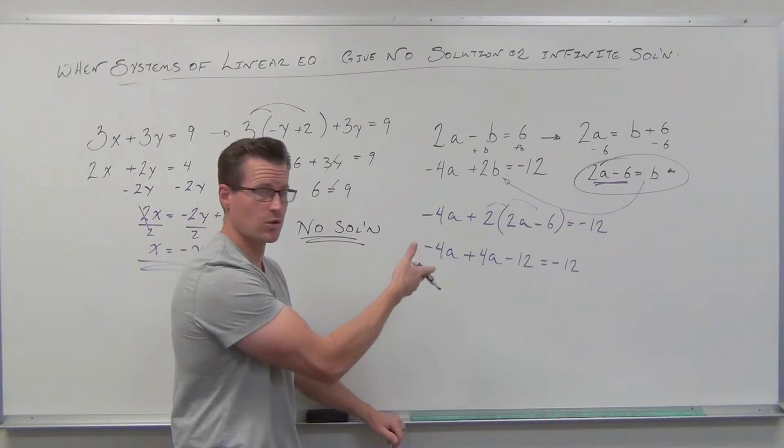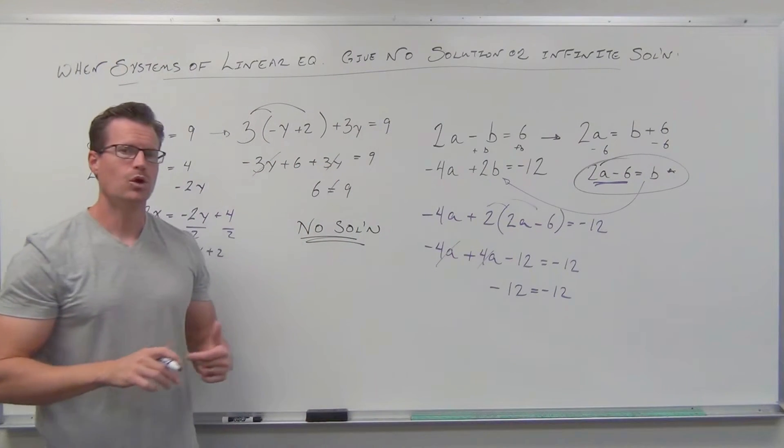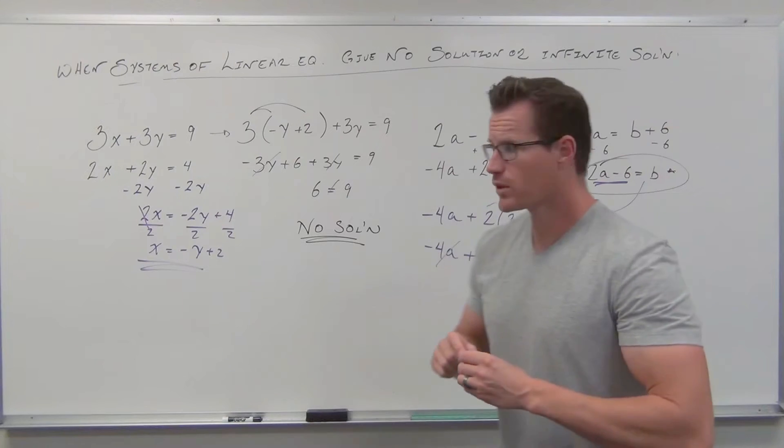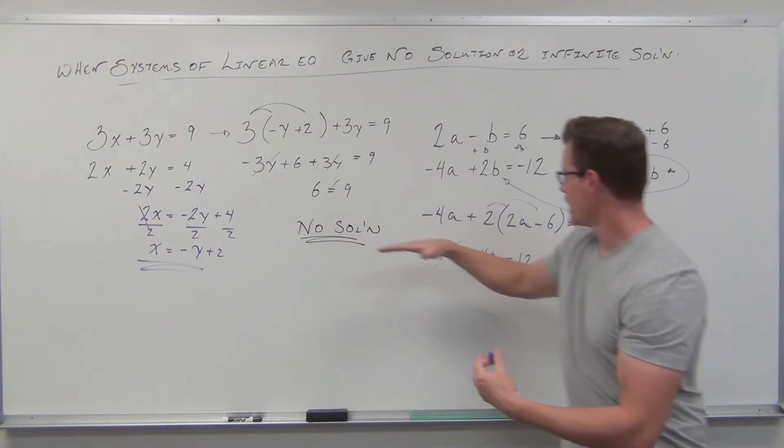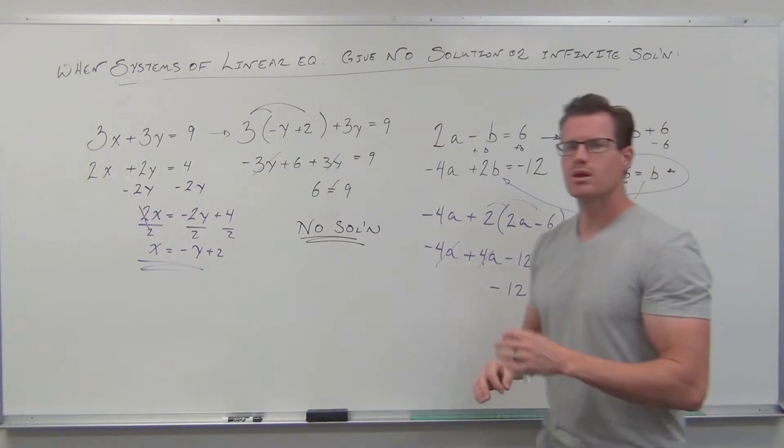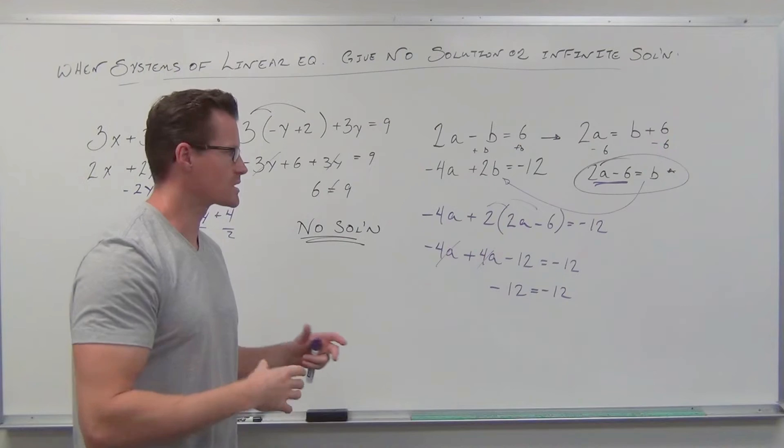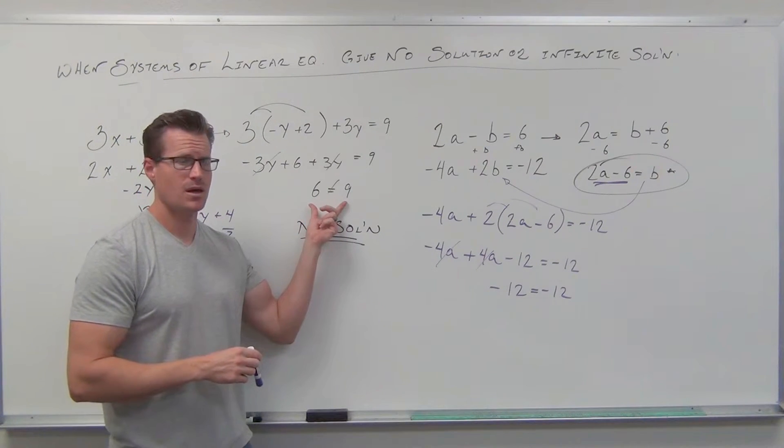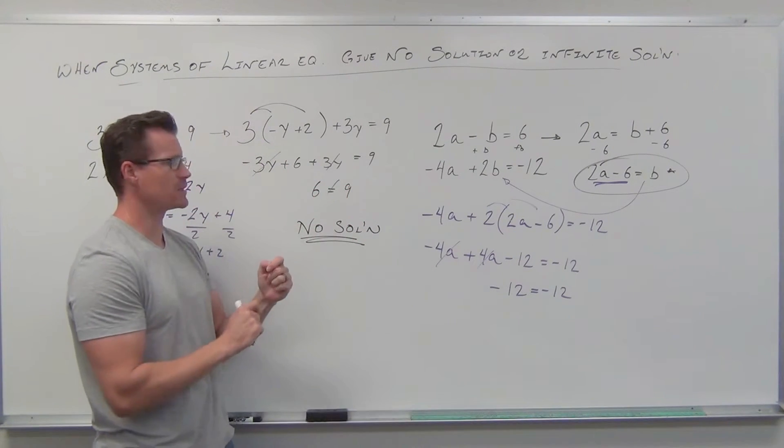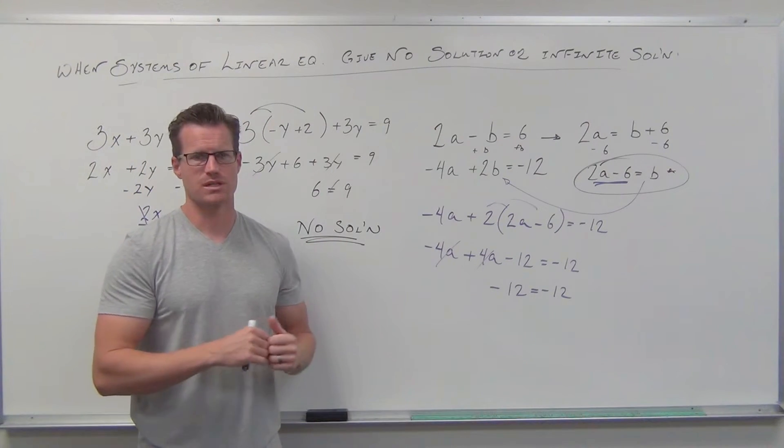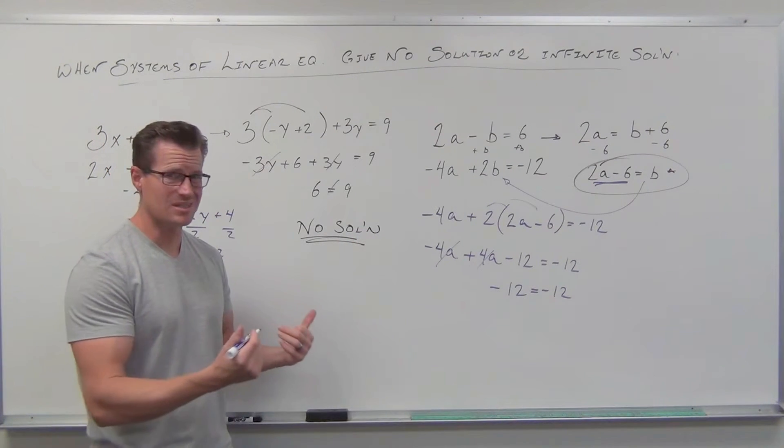Whoa. I'll combine some like terms. Now look what happens. Our A's are gone. But we get something that says -12 equals -12. Look how similar these examples are. In both cases, we solved for a variable, we did our substitution, worked it down, our variables disappeared. But what we're left with is the interpretation of whether we have no solution or infinite solutions. If you have this case where these numbers are never the same, then your lines are never going to intersect, ever. They're parallel. They're parallel lines and there's no solution. This no solution means that you're going to have parallel lines.